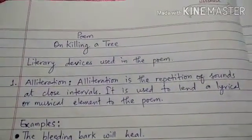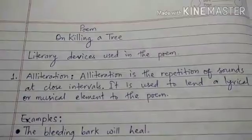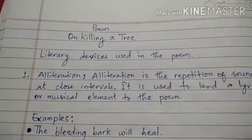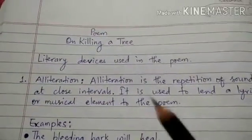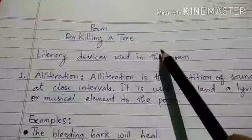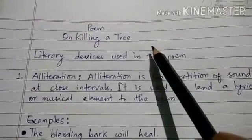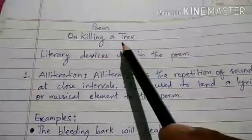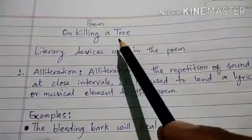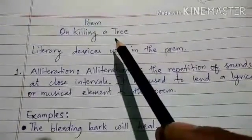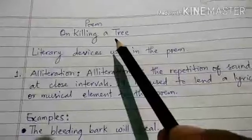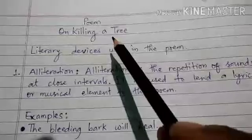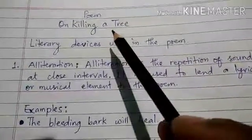Hello my dear students, welcome to CMIS online classes. In today's class, for the students of standard 9, we'll continue with the poem 'On Killing a Tree' by Gieve Patel. In our previous video, I have already explained this poem. I hope you have understood the explanation, what the poet wants to say, and what message the poet wants to deliver through this poem.